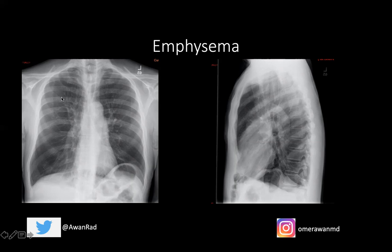On x-ray, emphysema shows hyperinflation. If you count the ribs, you can count 11 and a half — normally you should only count 10 ribs. The lungs are also hyperlucent, darker than expected due to emphysema. There is an increased AP diameter of the chest on the lateral view, and sometimes flattening of the hemidiaphragm. So the x-ray signs are hyperlucency, hyperinflation, increased AP diameter, and flattening of the hemidiaphragms.